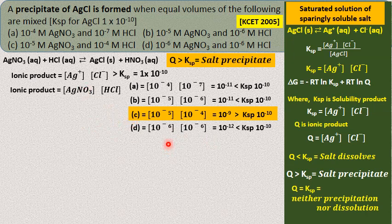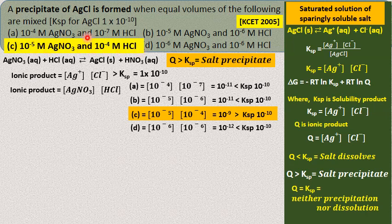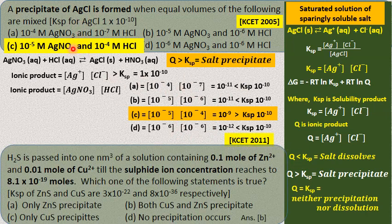So the answer is C — when [AgNO3] = 10⁻⁵ and [HCl] = 10⁻⁴, the ionic product exceeds the solubility product, resulting in precipitation of silver chloride. This is a very important question. Most questions will be on solubility product and solubility, which we will discuss further.